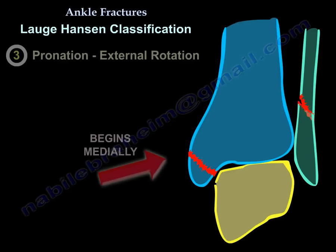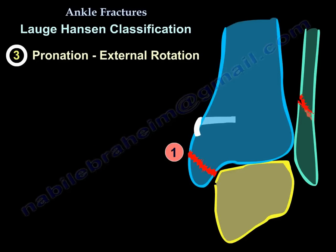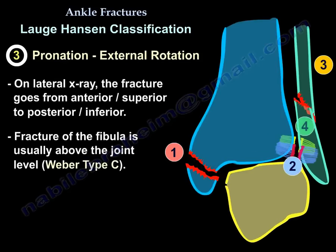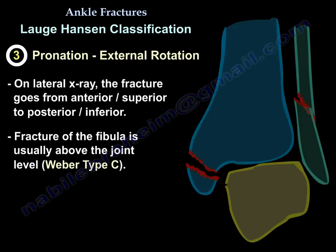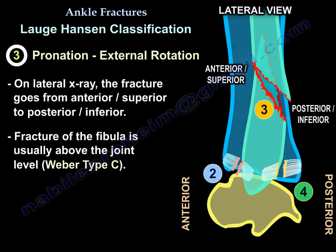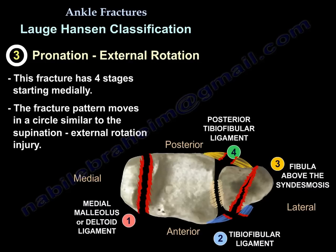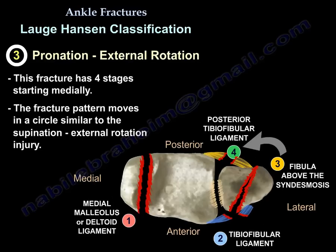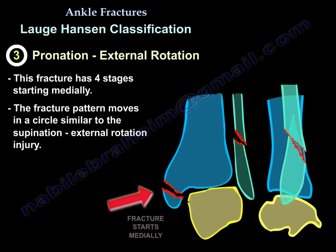The third type is the pronation-external rotation injury. In this case, the fracture goes from anterior-superior to posterior-inferior and is usually above the joint level — typically a Weber C fracture. This injury has four stages. It progresses in a circle similar to supination-external rotation, but starts medially at the medial malleolus or deltoid ligament and then moves in the same circular pattern.